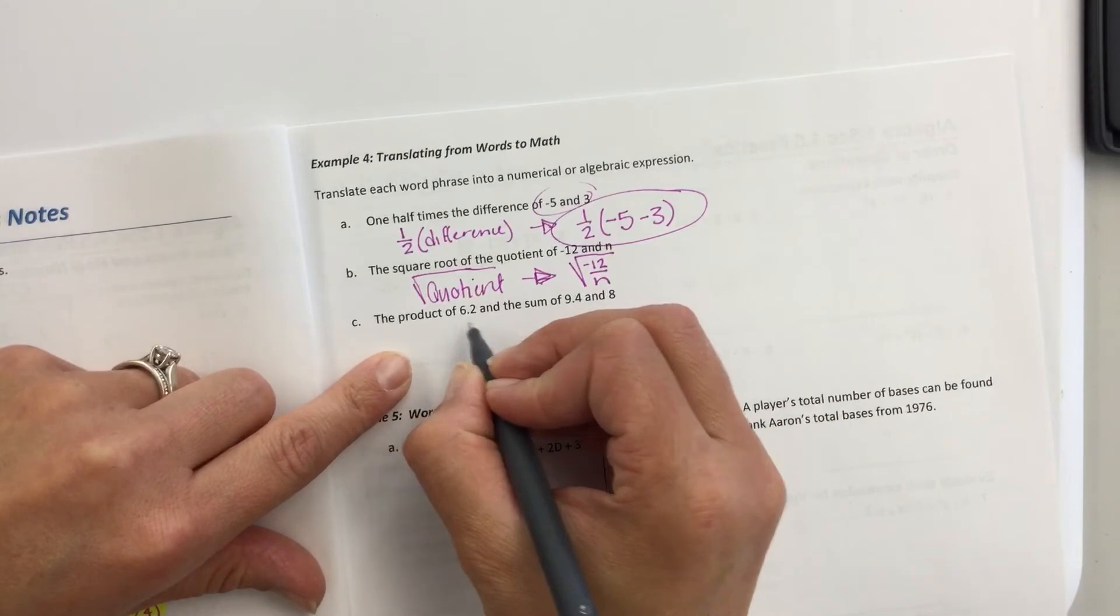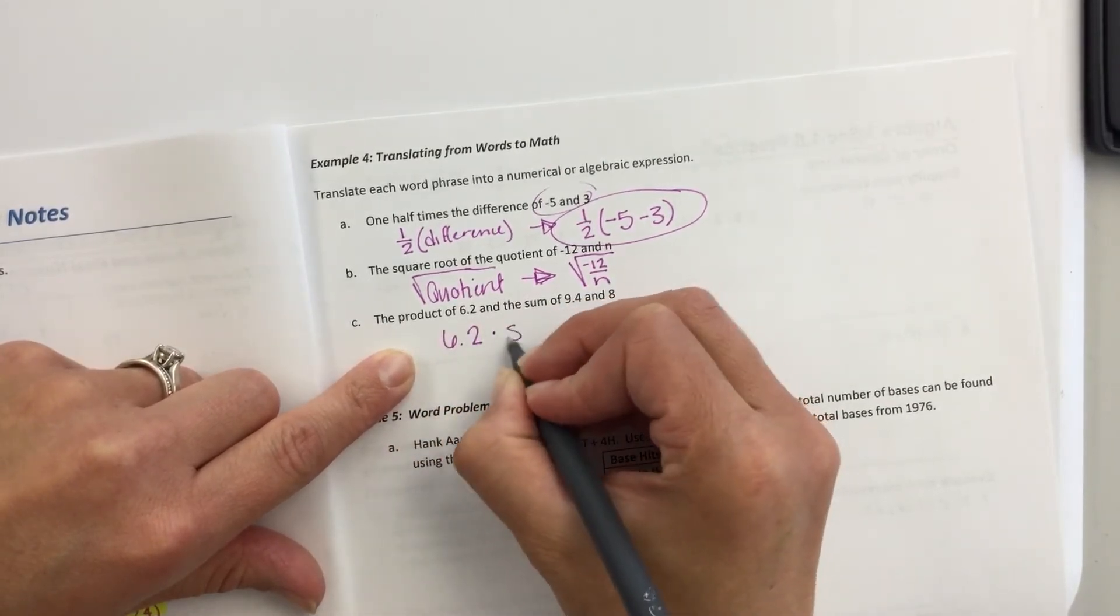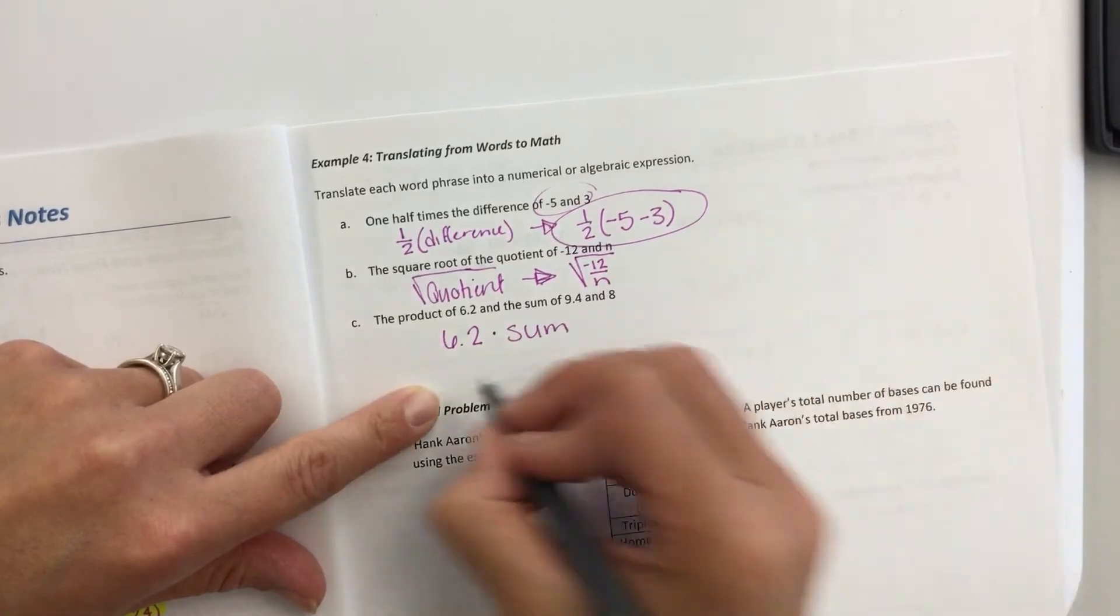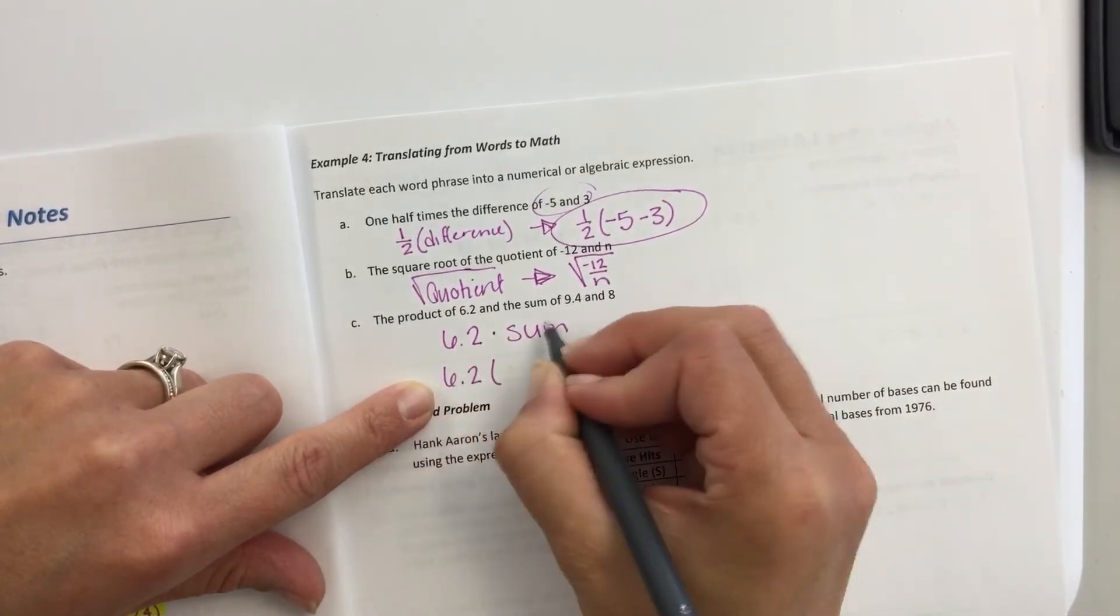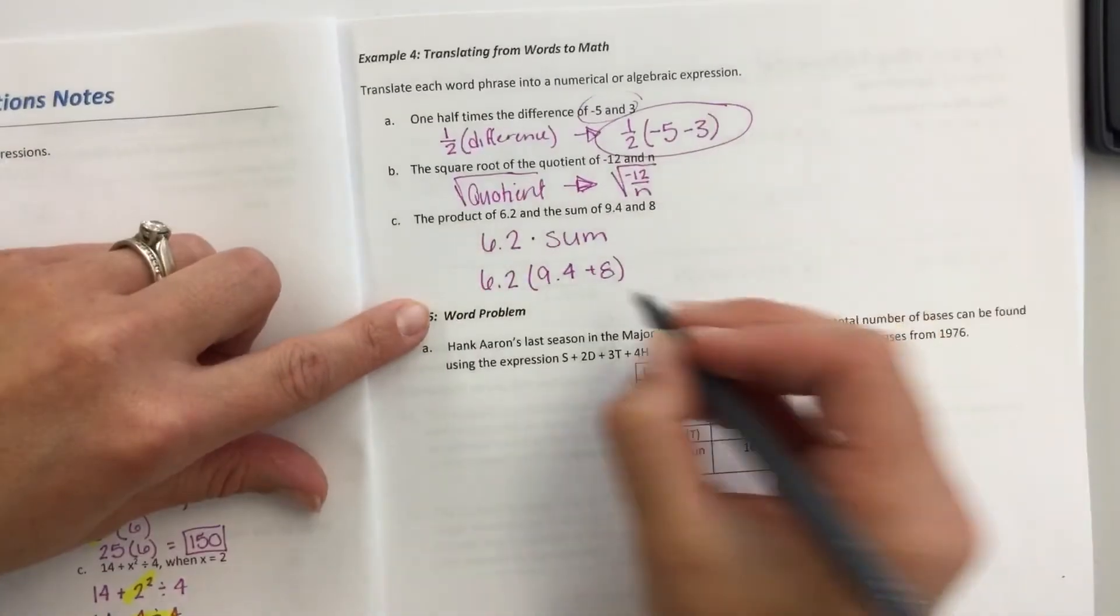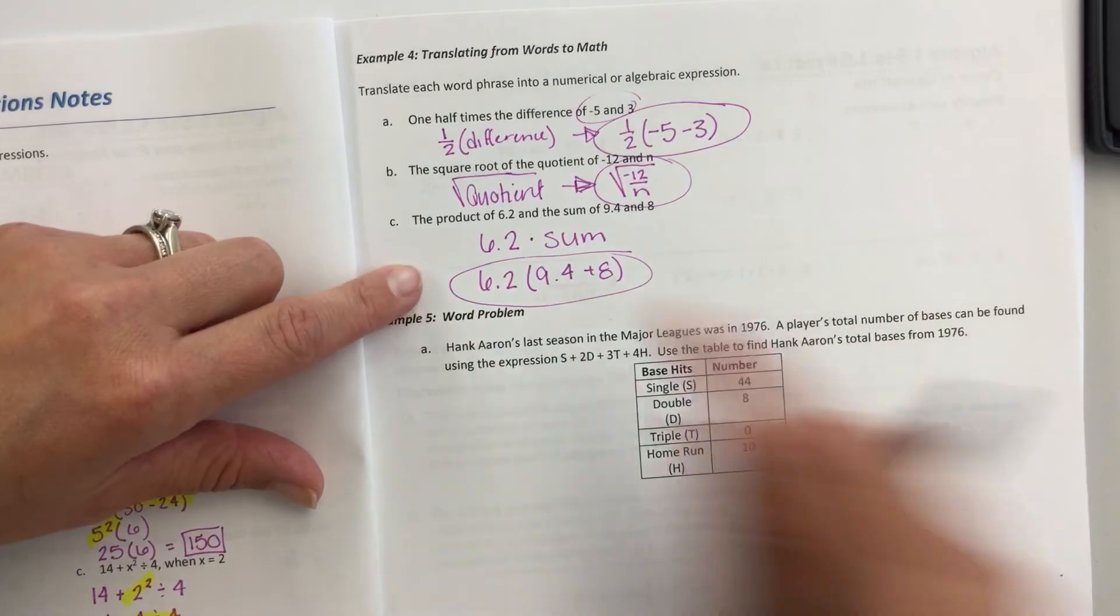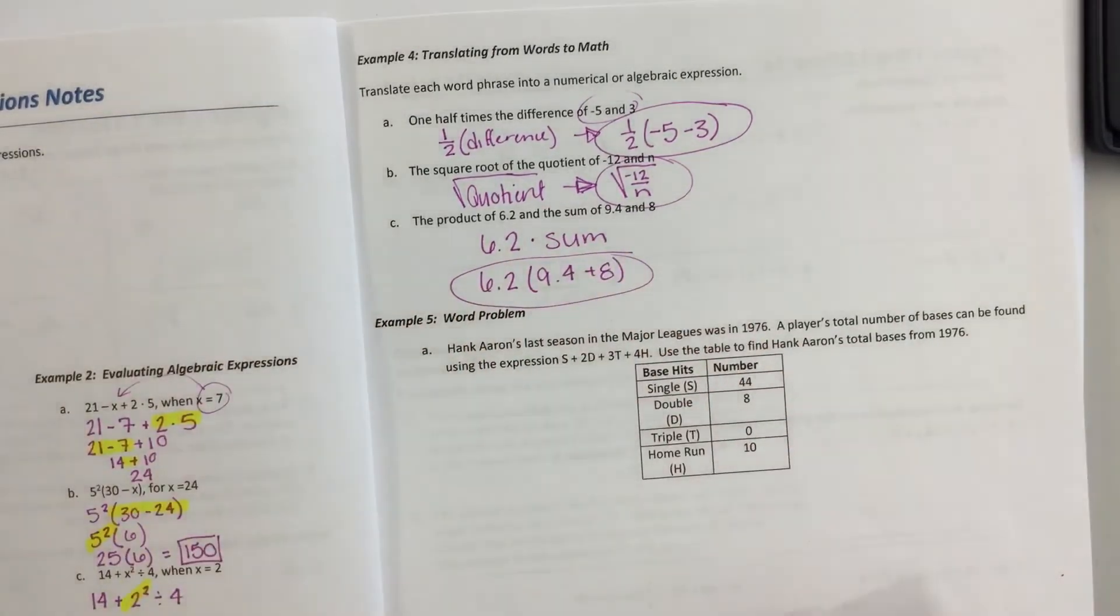The product of 6.2 and the sum. The sum of what? 6.2 times the sum of 9.4 and 8. Okay, so I think doing this in words helps a lot. It does for me anyways.